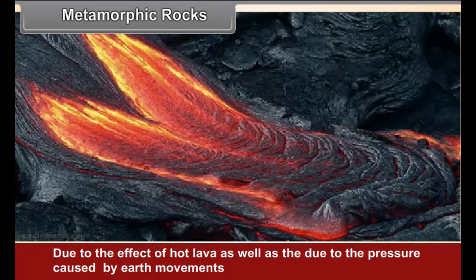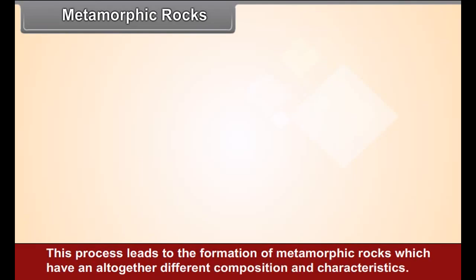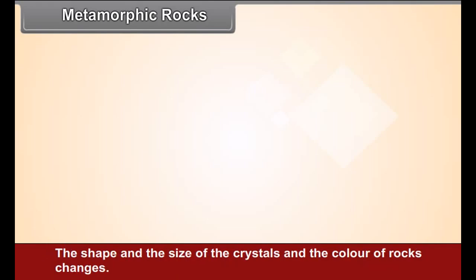Metamorphic rocks: due to the effect of hot lava as well as due to the pressure caused by Earth movements, the crystals in the original rocks — igneous or sedimentary — get crystallized again. This process leads to the formation of metamorphic rocks, which have an altogether different composition and characteristics. The shape and size of the crystals and the color of rock changes. As these rocks are produced through the process of recrystallization, metamorphic rocks do not contain fossils.